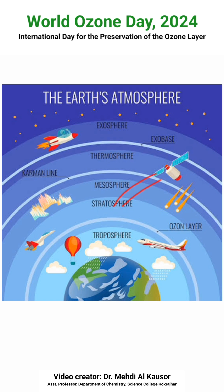The mesosphere is above the stratosphere and extends up to 80 kilometers. The temperature in this region gradually decreases with height, reaching a minimum of about minus 90 degrees centigrade. Then comes the thermosphere, which lies in the region of 80 to 700 kilometers, where temperature increases with height. This temperature increase is caused by the absorption of energetic ultraviolet and X-ray radiation from the sun.